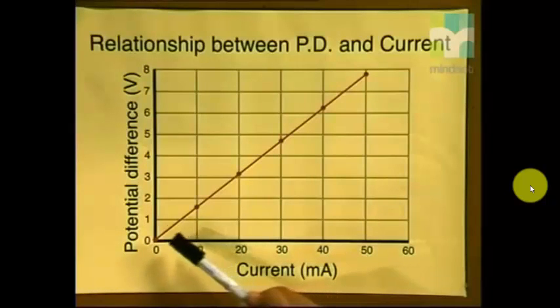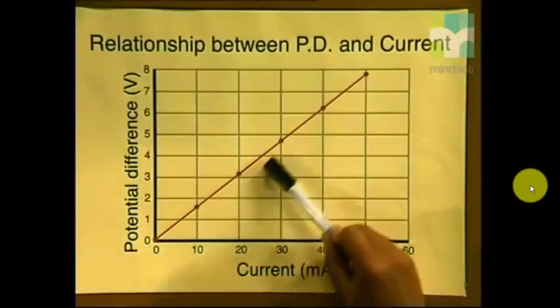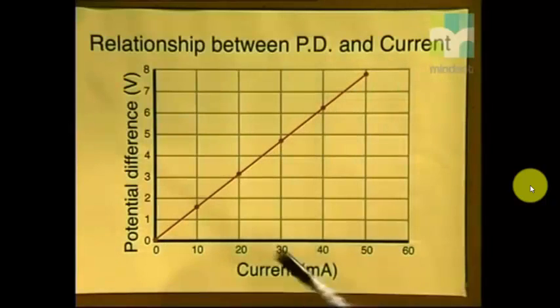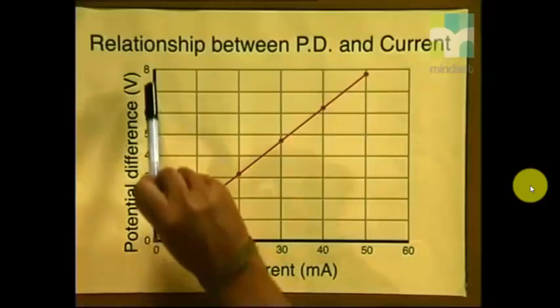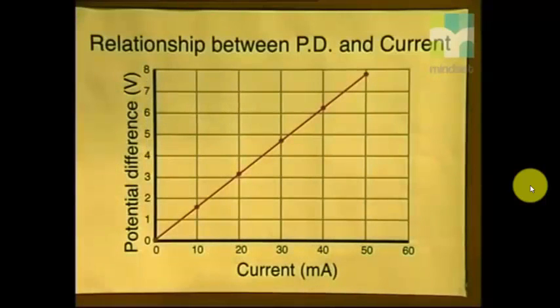Do you see that the graph that is now plotted is a nice straight line? This shows us that as the current increases, so the potential difference is also increasing. Therefore, we can now say that potential difference is directly proportional to the current that flows through the resistor.